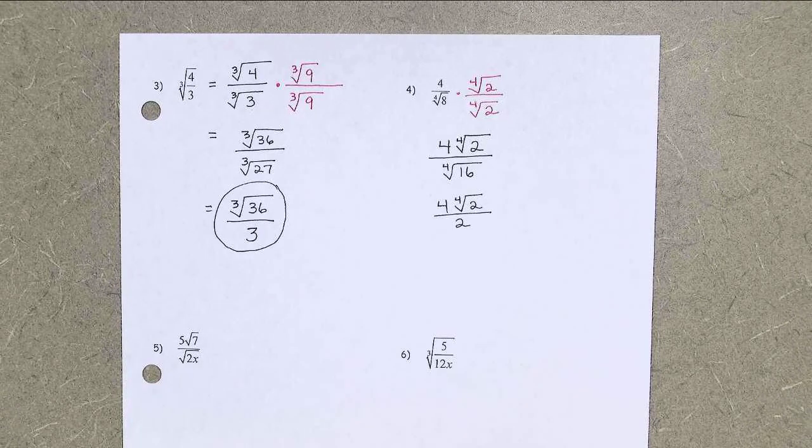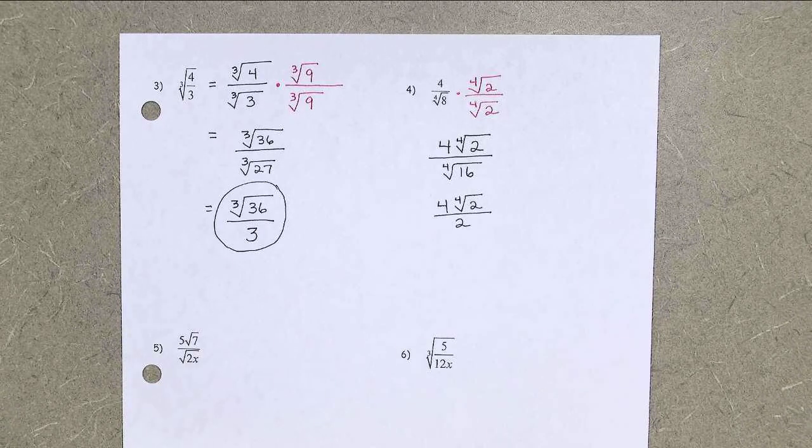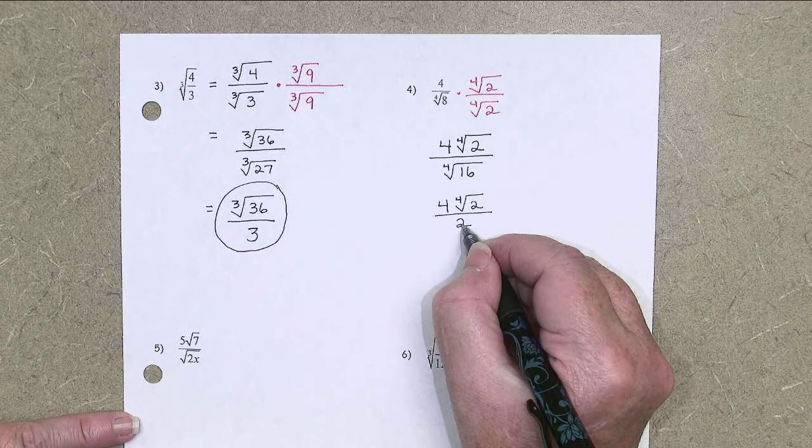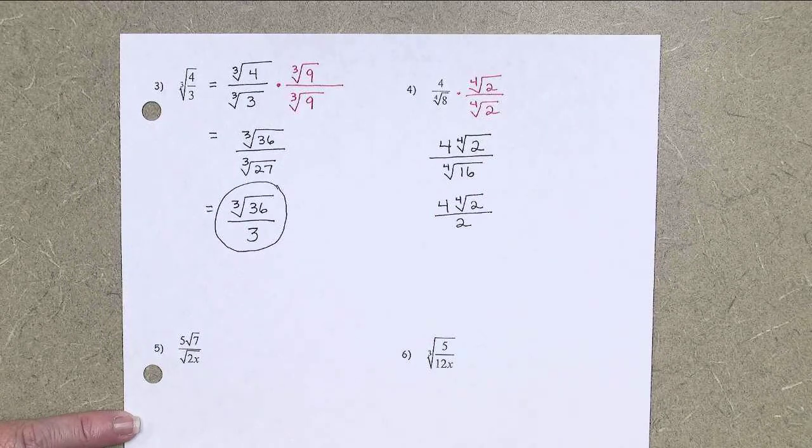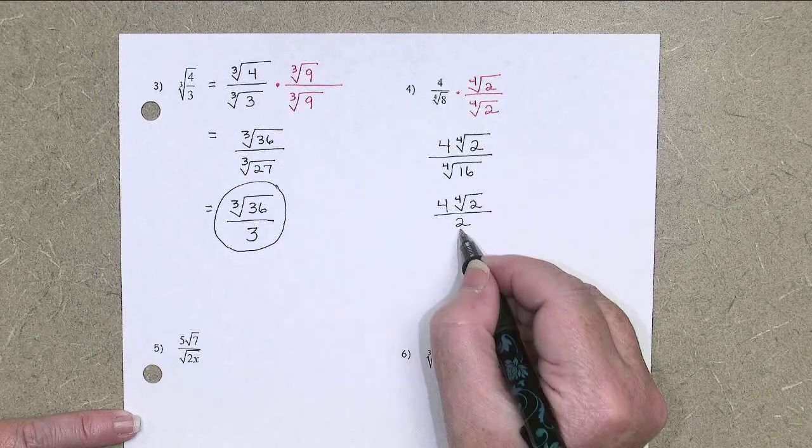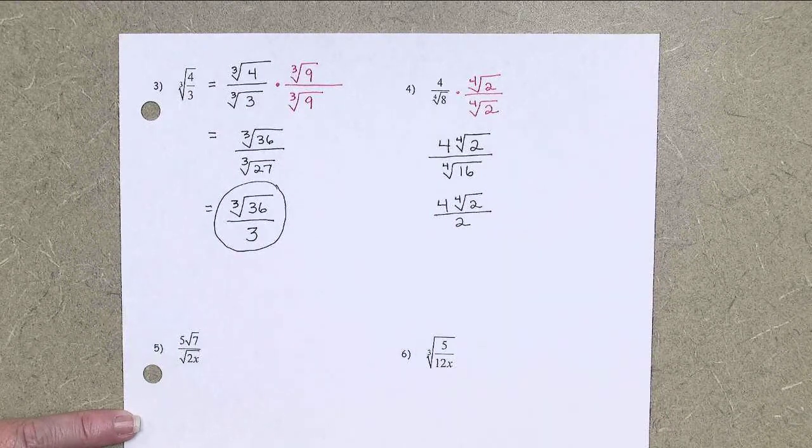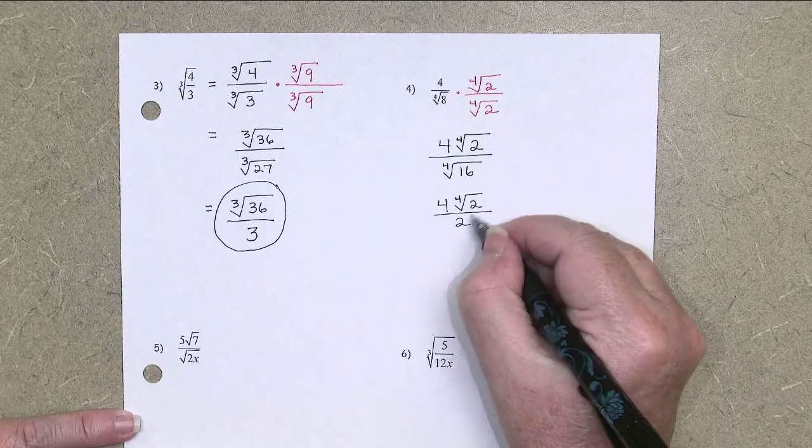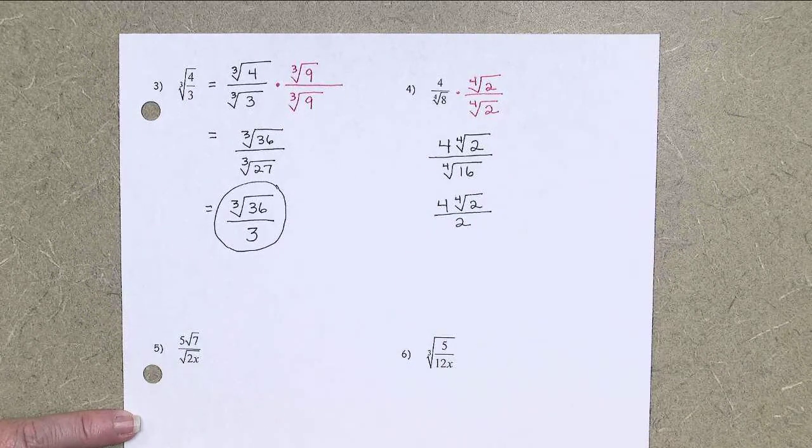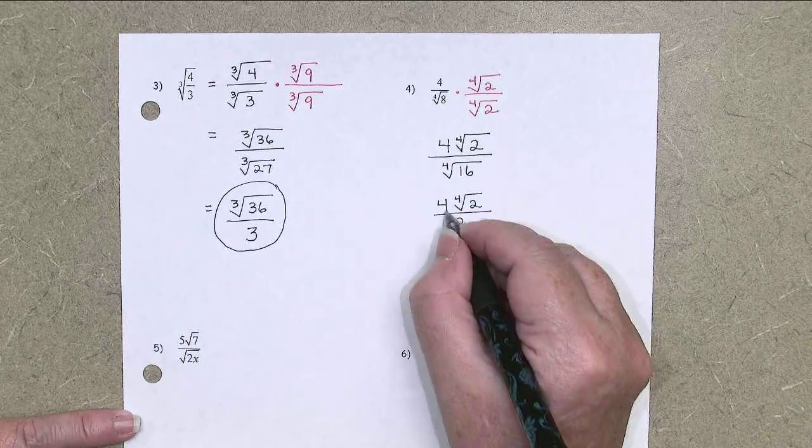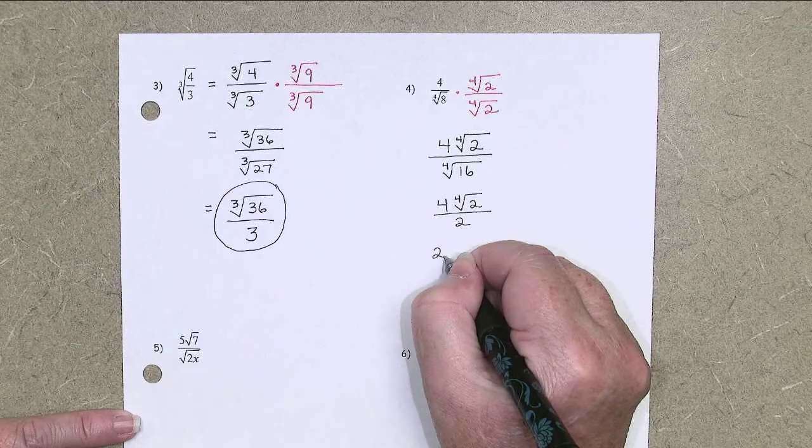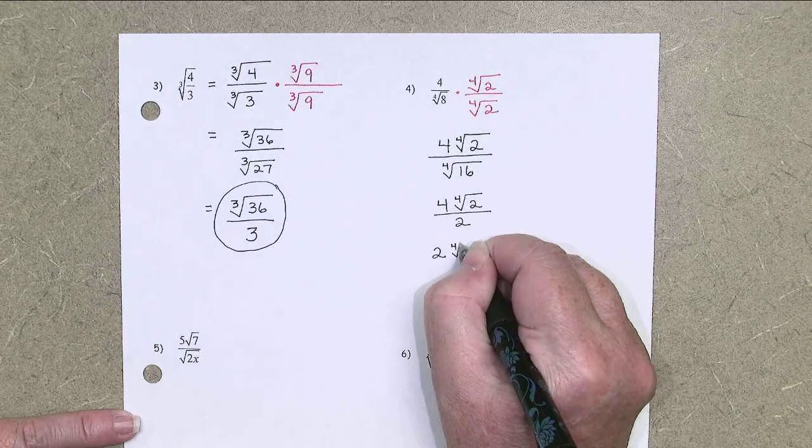Can we simplify that answer any more? Can I divide the 2 into the 2 or the 4? Into the 4, right? Those numbers are not inside radicals. I cannot do an inside number and an outside number together. So 4 divided by 2 is 2. And then that 4th root of 2 stays just the way it is.